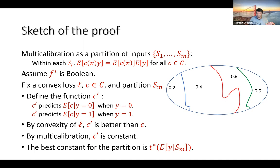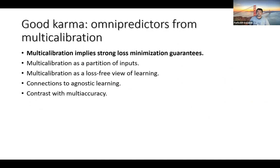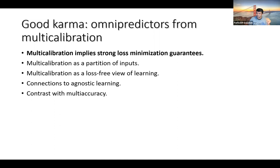To summarize: multi-calibration gives you good karma — a very strong loss minimization guarantee. There's a nice new partition-based definition of multi-calibration interesting in its own right, giving rise to a loss-free view of learning. It connects to agnostic boosting literature and highlights an interesting contrast between multi-accuracy and multi-calibration.